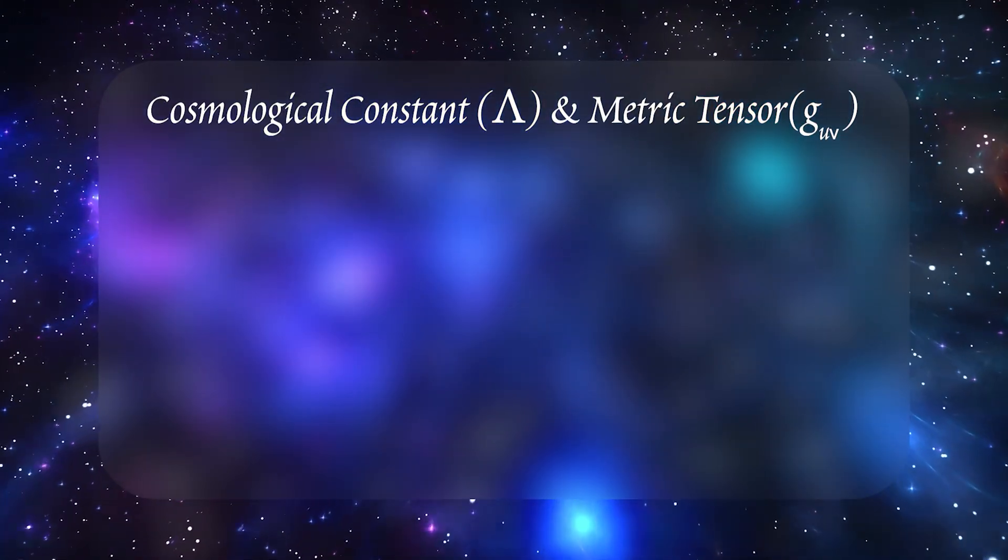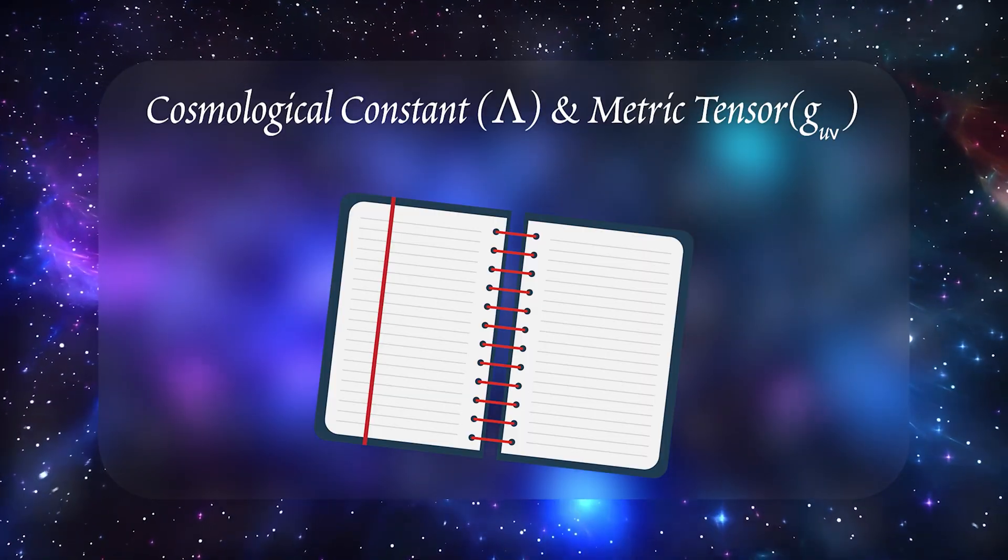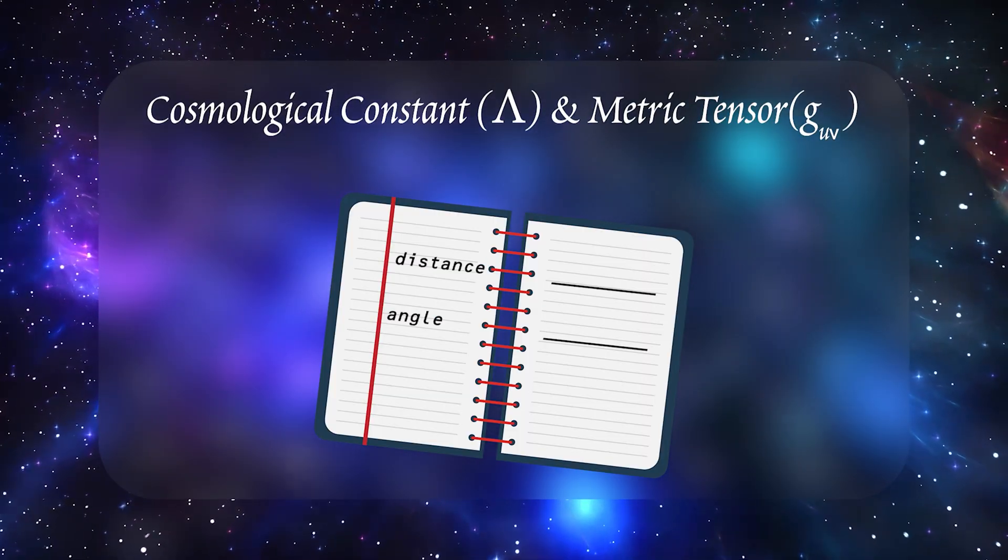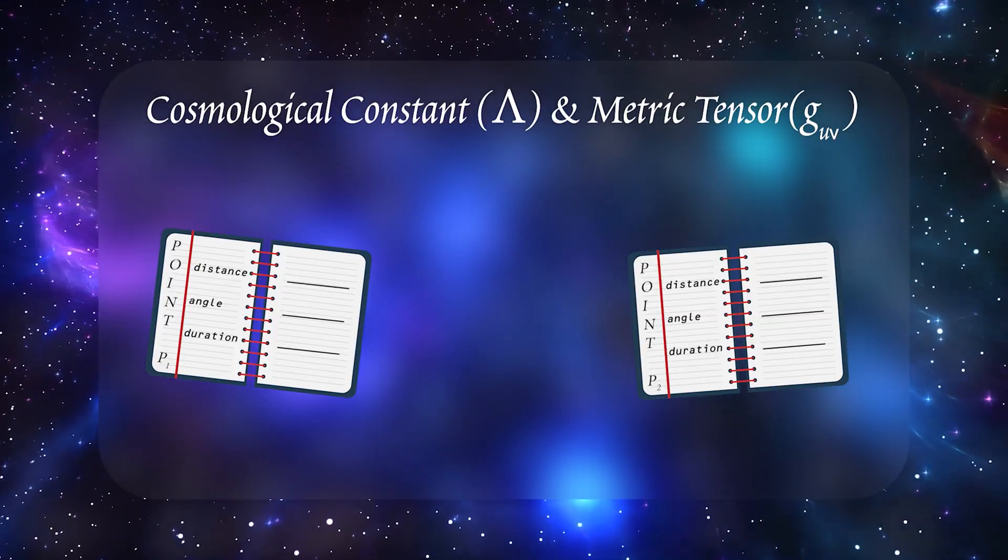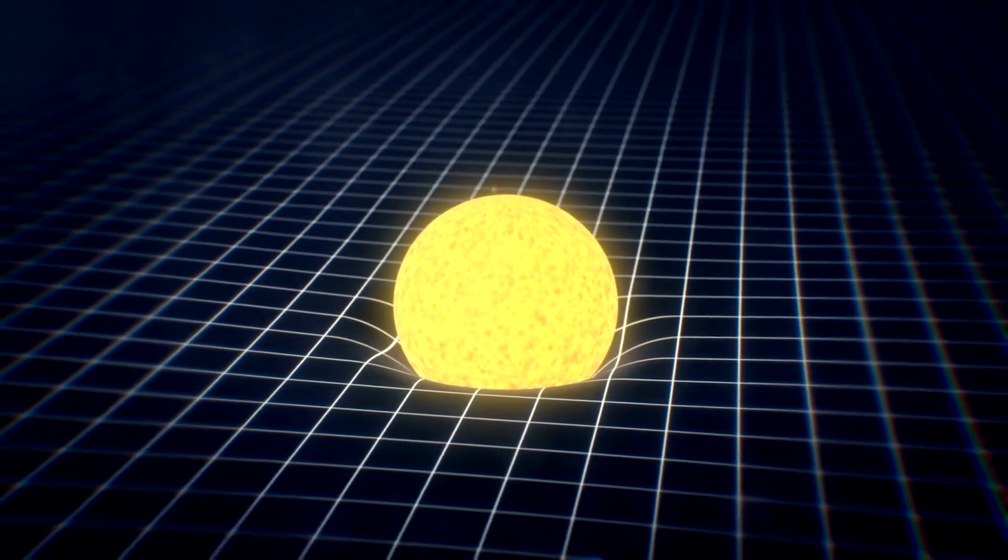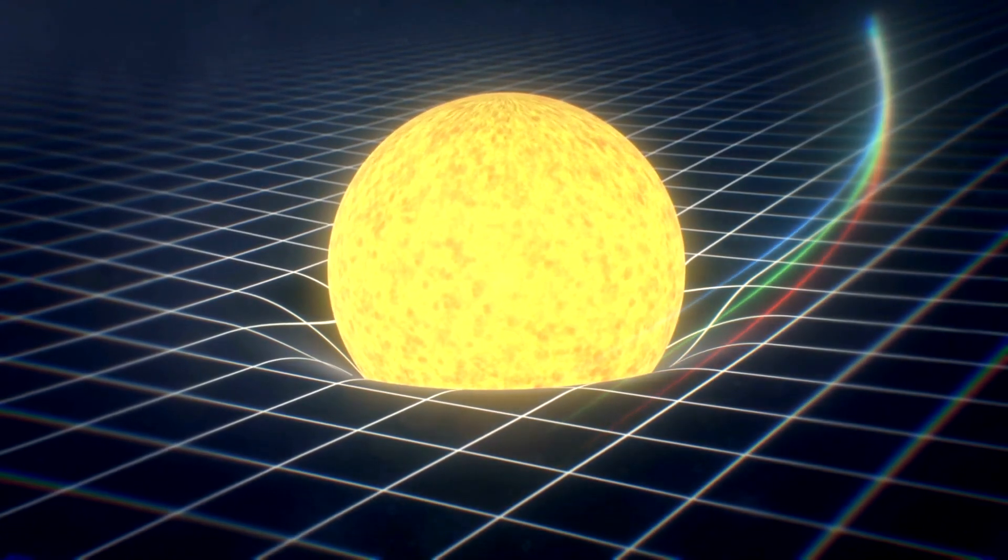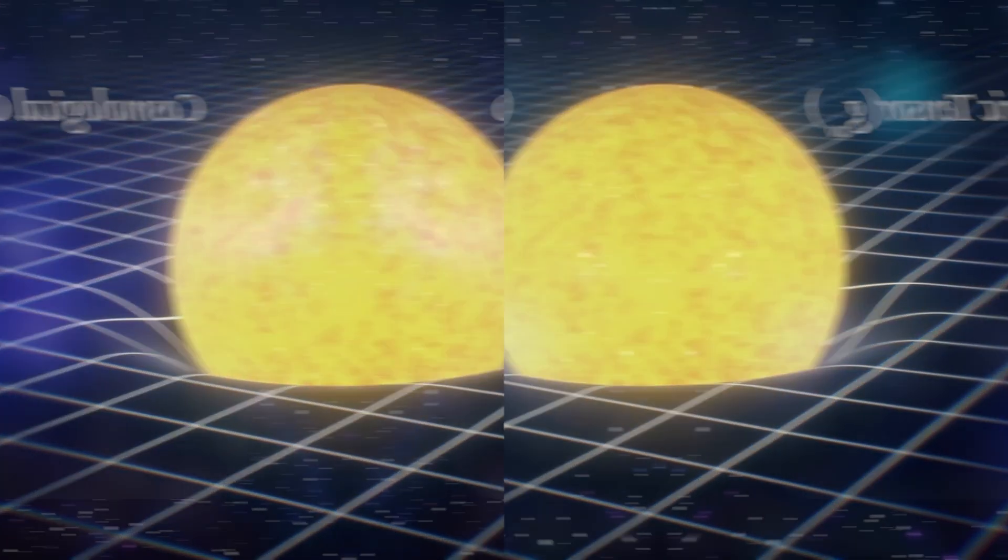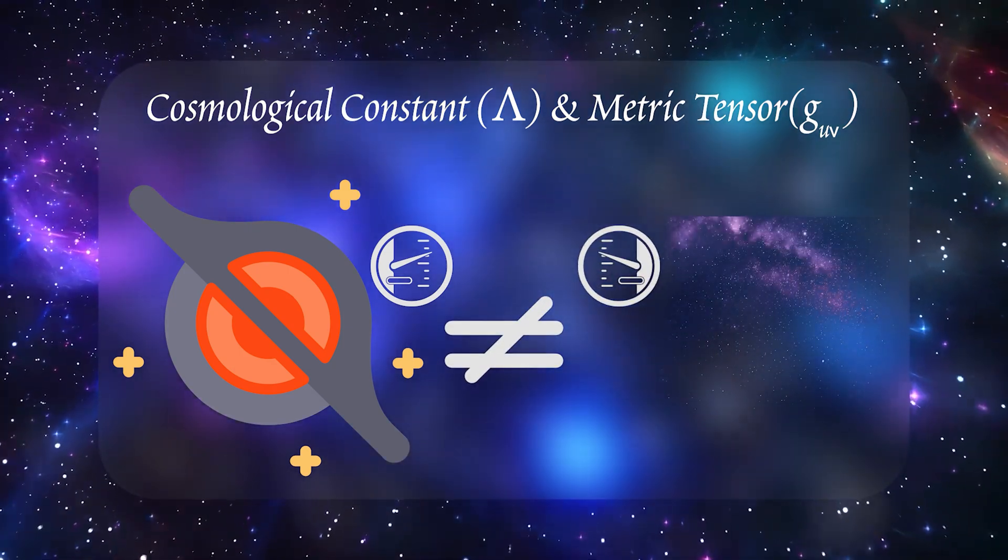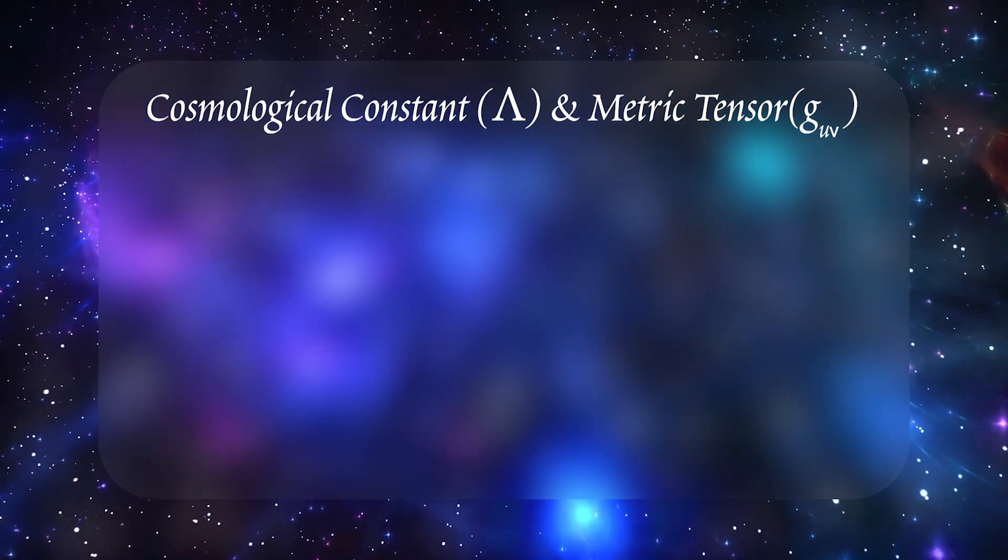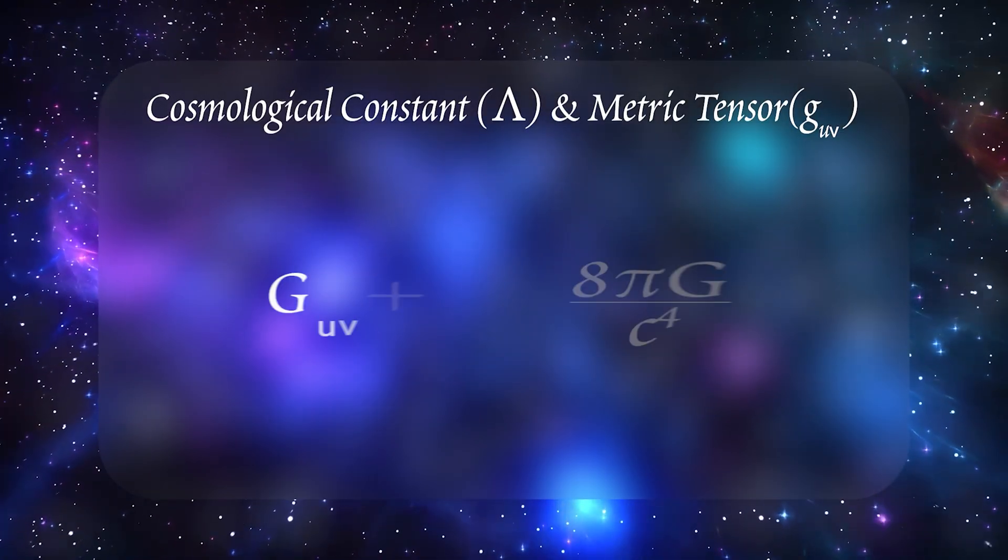The metric tensor is the blueprint for measuring distances and times. Think of it like a blueprint or set of instructions that tell you how to measure things—distances, angles, even durations of time—at each point in your spacetime fabric. In the actual universe, where spacetime can curve around massive objects, those measuring instructions, i.e., the values of the metric tensor, vary from place to place. That means a meter near a black hole might not correspond to the same meter out in the emptiness of interstellar space. When multiplied, these terms effectively add a universal push or pull, possibly driving cosmic acceleration.